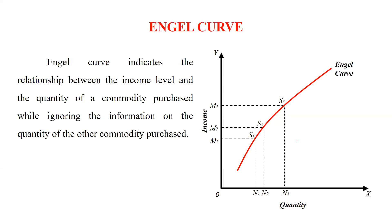Hi everyone, let's understand what we mean by angel curve. Angel curve indicates the relationship between the income level and the quantity of a commodity purchased, while ignoring the information on the quantity of the other commodity purchased.